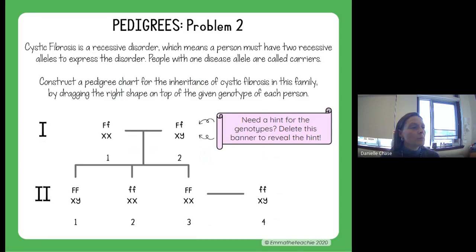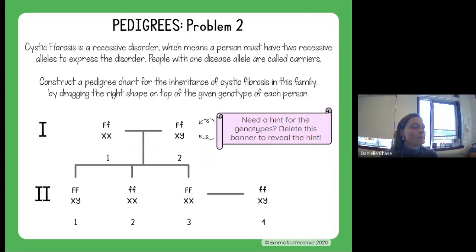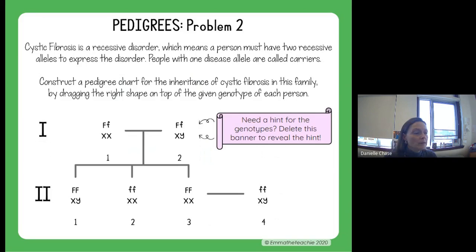The next one: cystic fibrosis is a recessive disorder, meaning a person needs two recessive alleles to have the disorder. People with one disease allele are called carriers. You're going to construct a pedigree chart for the inheritance of cystic fibrosis by dragging the correct shape onto the genotype for each person. They're using sex chromosomes to indicate male or female, and letters to represent genotypes. The lowercase letter represents the cystic fibrosis allele; the capital letter is the normal one.